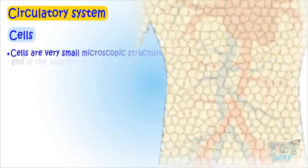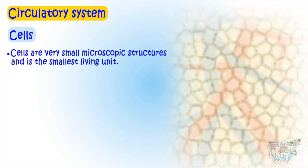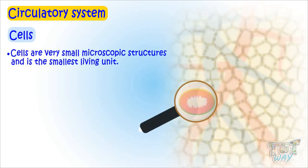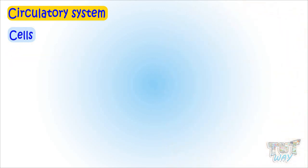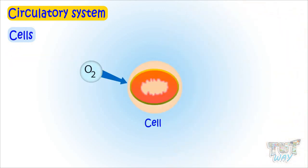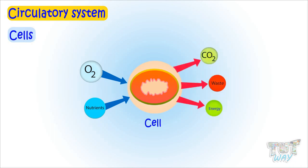Cells are very small, microscopic structures and are the smallest living unit. It's the cells that take in oxygen and nutrients from the blood and produce energy for the working of the cell. Carbon dioxide and waste are also produced in this process.